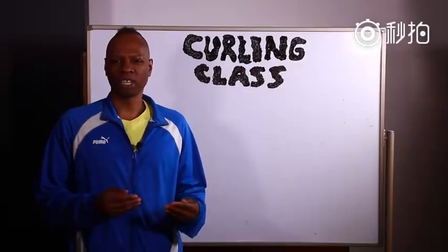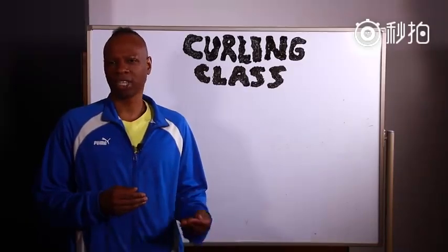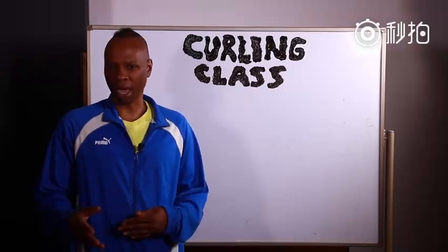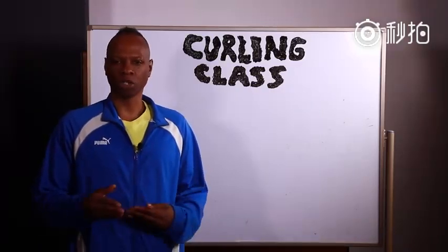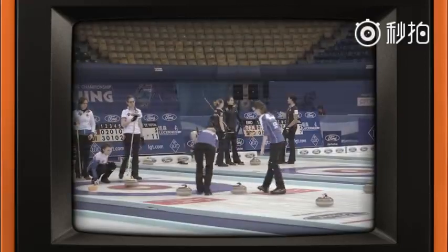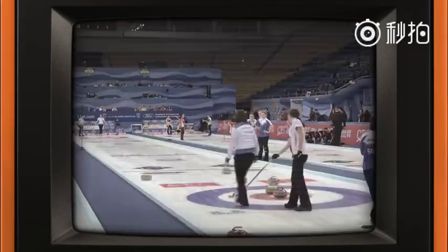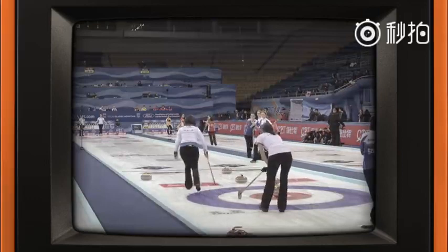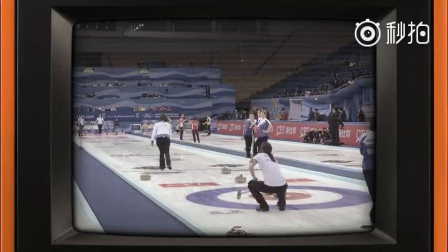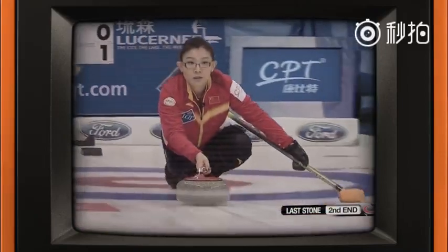Let's get into another session of curling class as we explore the logistics of a match. Each team, also known as a rink, has four members: the lead, the second, the third (also called the vice), and the skip, who is the team's captain. The skip throws last.